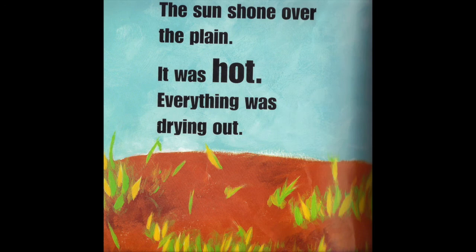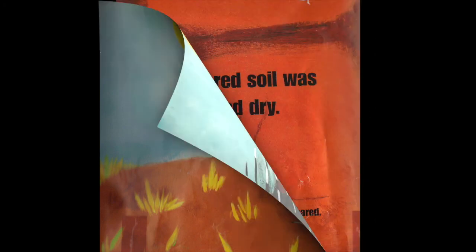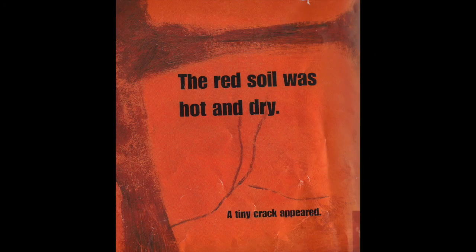The sun shone over the plain. It was hot. Everything was drying out. What do you notice now about the soil and the grass? And where is the porcupine? The red soil was hot and dry. A tiny crack appeared.